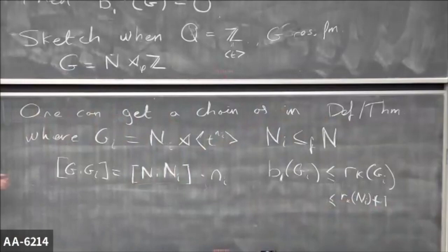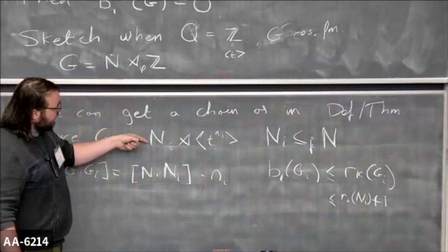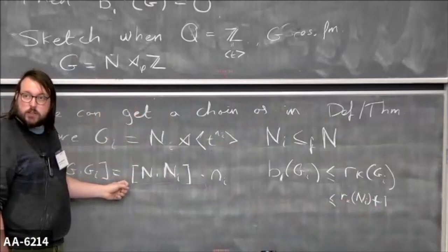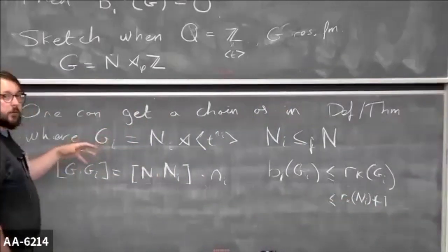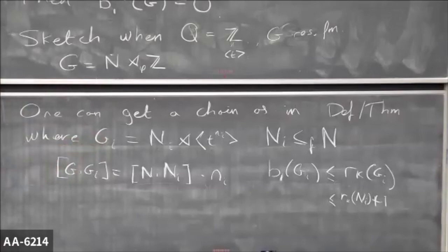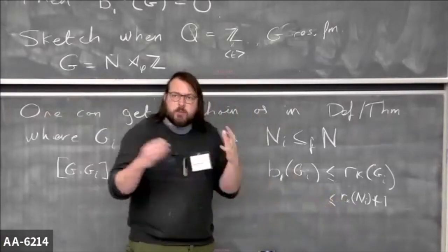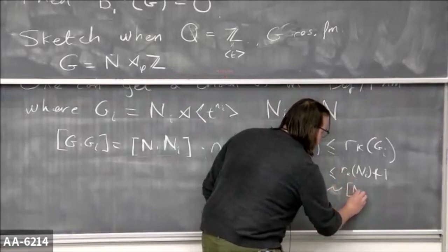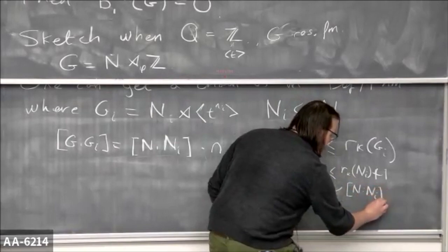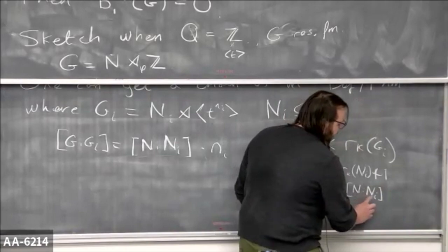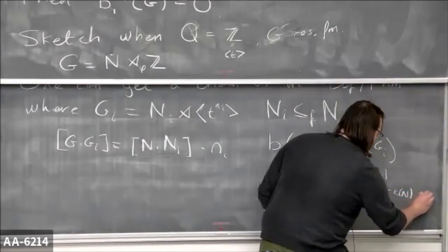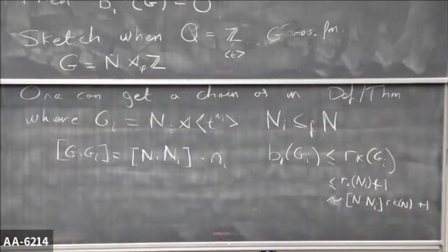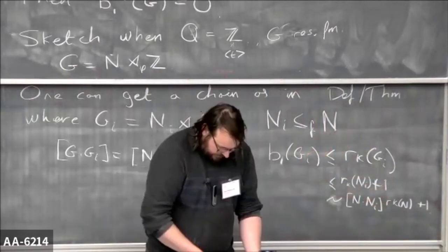What's the worst case for the rank of Nᵢ? If I take a free group surjecting onto N, then Nᵢ is a quotient of a finite index subgroup of that free group of this index. The preimage of a finite index subgroup under a surjection is a finite index subgroup of the same index. So the rank grows approximately as the index of Nᵢ in N times the rank of N plus one. You can work this out: draw a graph, draw a cover, count edges, count vertices, figure out how many edges are not in a maximal tree.